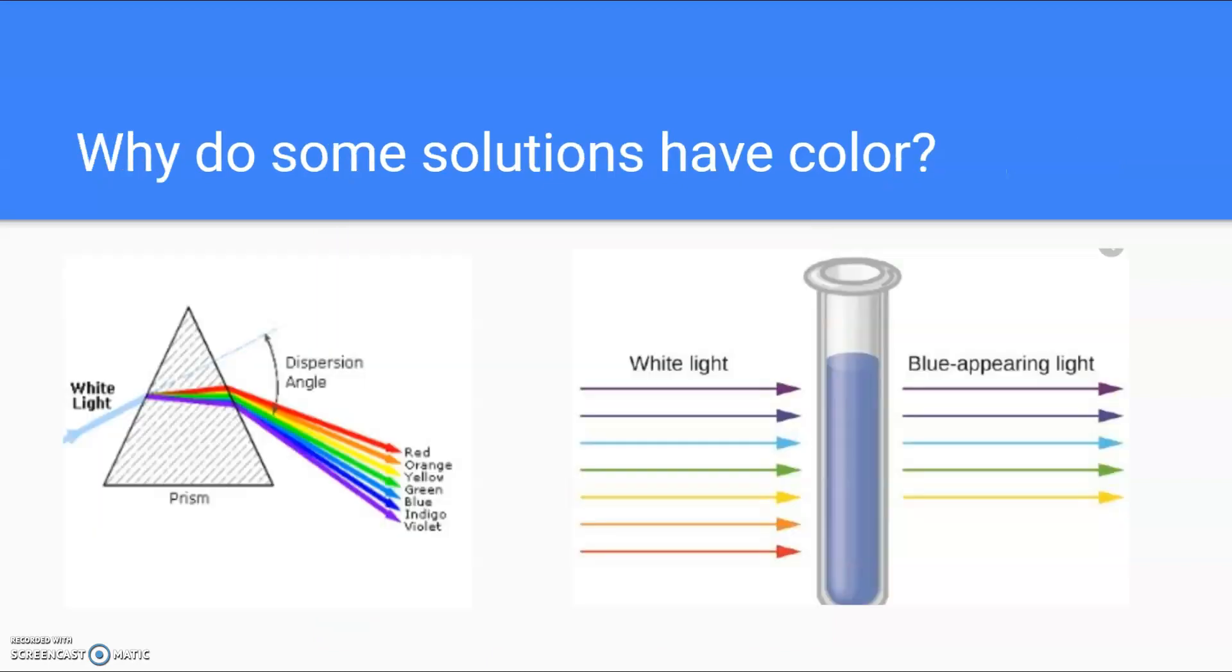Now, to understand how a UV spectrophotometer works, you have to kind of understand why solutions have color in the first place. So perhaps you know from grade school that white light actually has multiple colors involved. So white light, you can break it up with the prism. And you see that white light is actually composed of the rainbow, red, orange, yellow, green, blue, indigo, and violet, ROYGBIV.